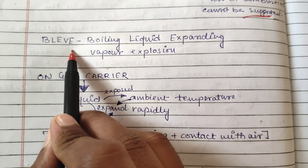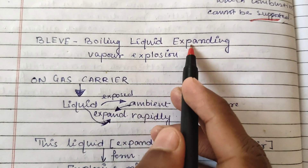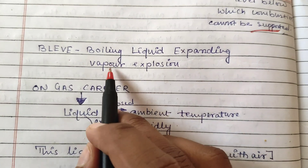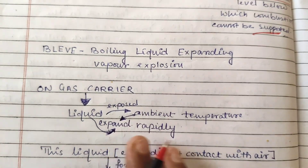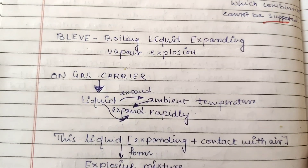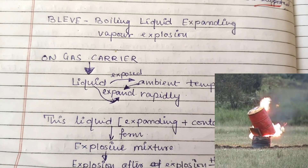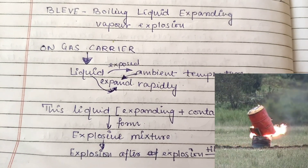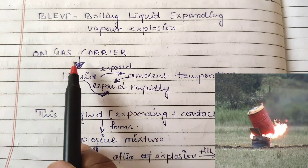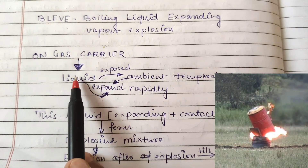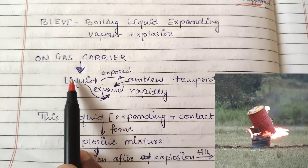BLEVE stands for Boiling Liquid Expanding Vapor Explosion. This is an important term used on gas carriers. Let's understand what this term means.